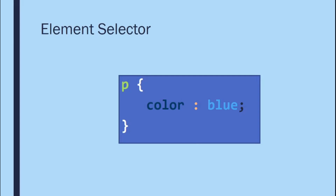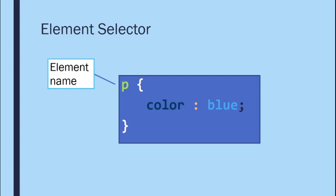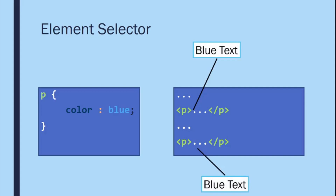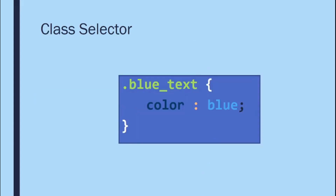The element selector points to specific kinds of elements on your HTML page, regardless of how many there are. For example, if we declare a 'p' selector with color blue, then every single paragraph in the HTML page — whether there's one or a thousand — will have a blue color. You only need to specify the element name, then add open and close curly braces with your declarations.